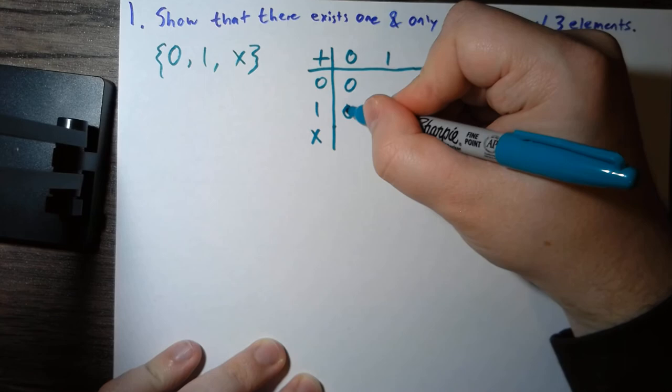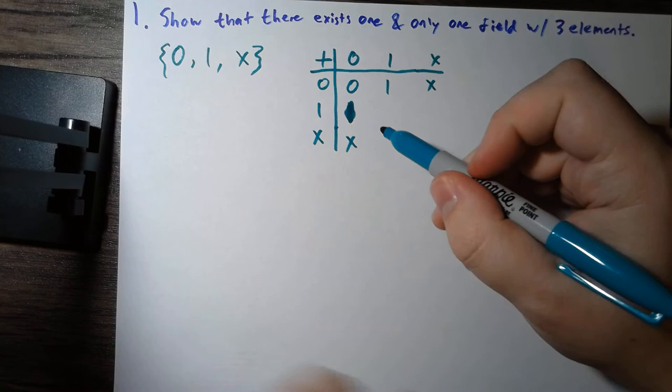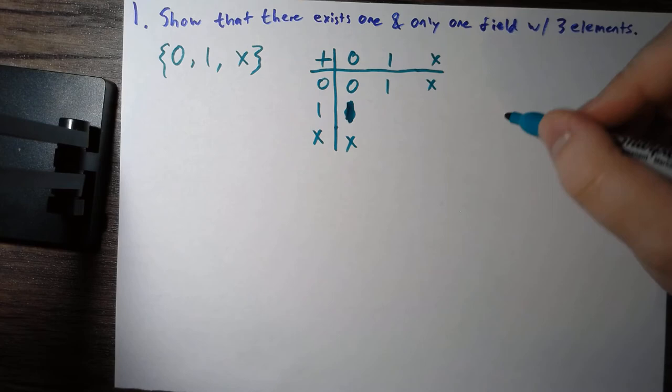Oh, it has to be itself. So zero, one x, one x. Okay, so this is about all we know right now for addition.